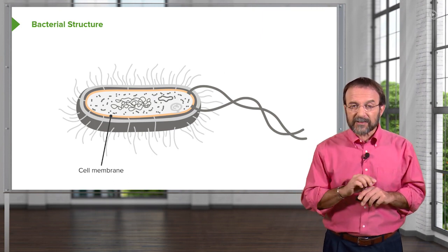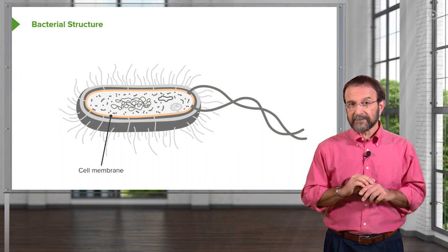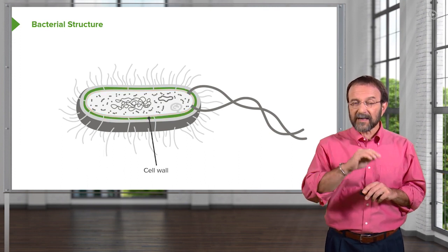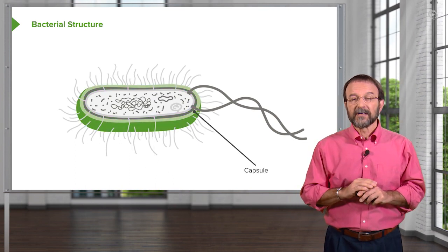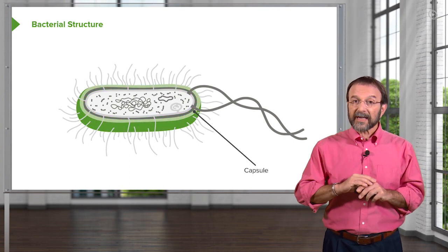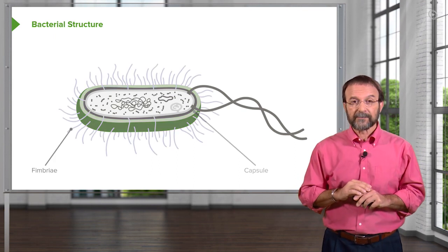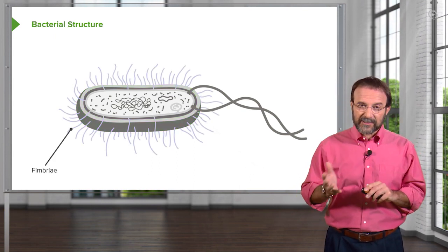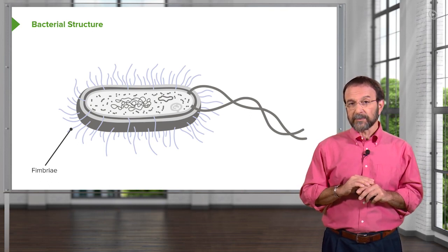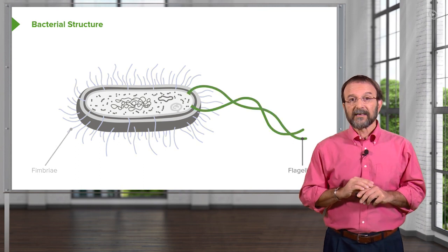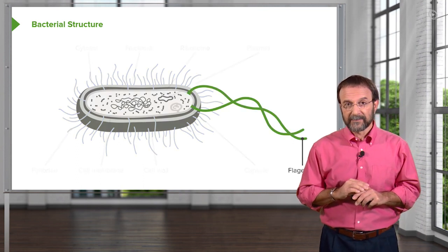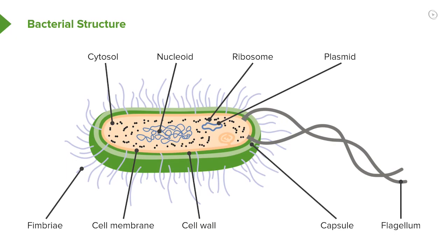Surrounding the cytosol is what we call a cell membrane. On top of the cell membrane, there's typically a cell wall. And many bacteria have on the very outside what we call a capsule. On the very external part of the bacteria are some structures that help movement: one is called the fimbriae, or pili, and the other is the flagellum. That's an overview of the bacterial cell and its various components.